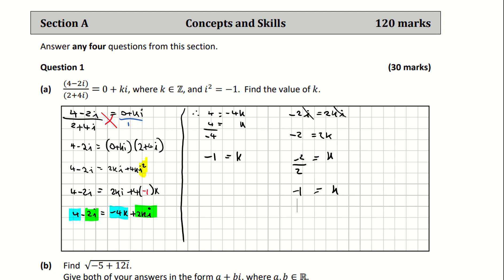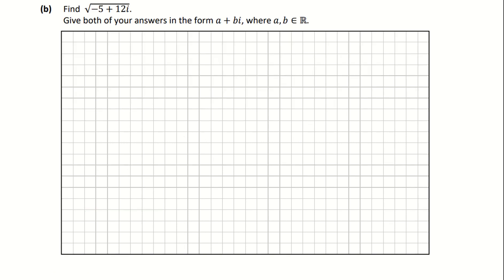Moving down to part b. Part b wants us to find the square root of minus 5 plus 12i in the form a plus bi. I'm going to let a plus bi equal the square root of negative 5 plus 12i. To get rid of the square root, we square both sides.